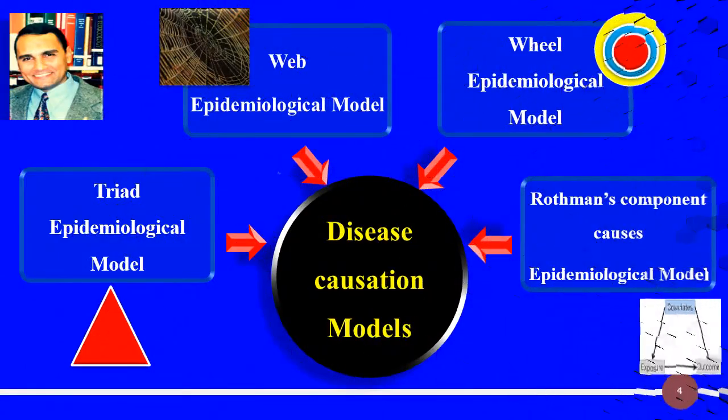All over the world, there are four disease causation models that are important in understanding how disease occurs: the Triad Epidemiological Model, the Web Epidemiological Model, the Wheel Epidemiological Model, and Rothman's Component Cause of Causation Model.